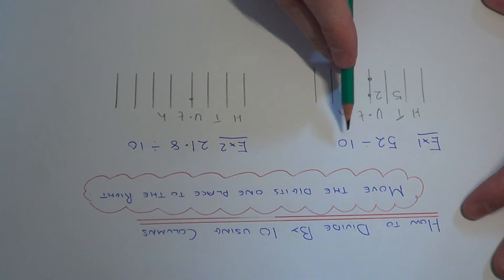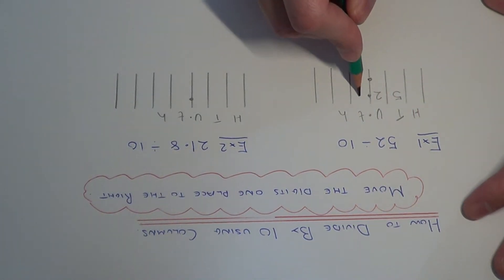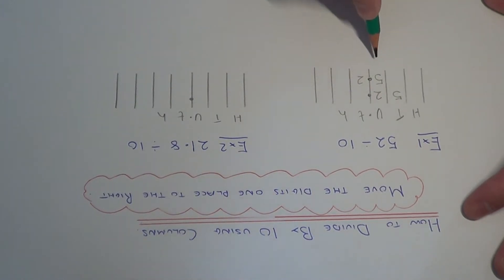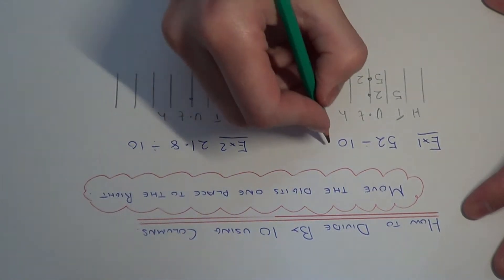Let's just move each of the digits one place to the right. The 2 will go one place right. The 5 will go one place right. So we end up with the answer 5.2.